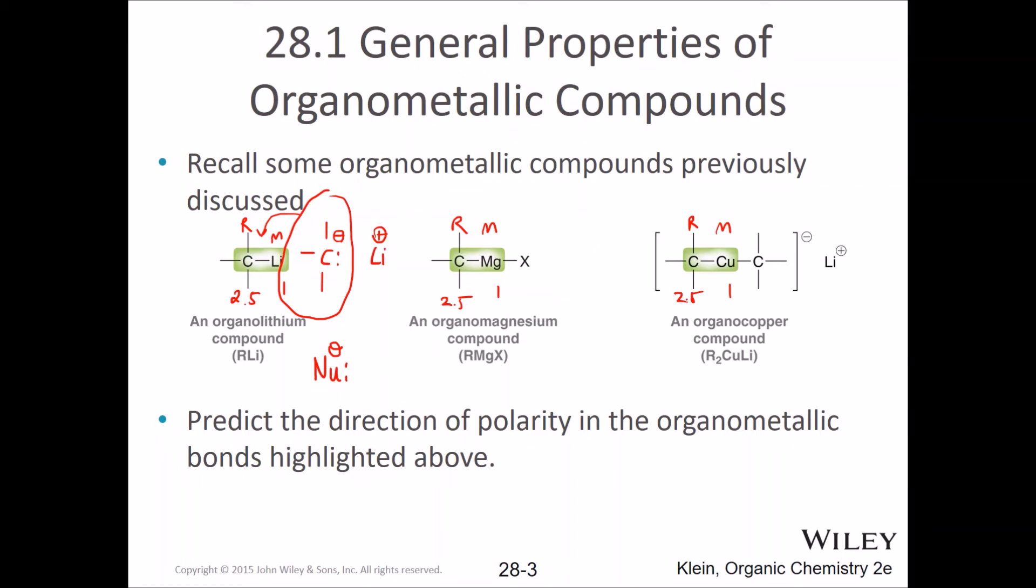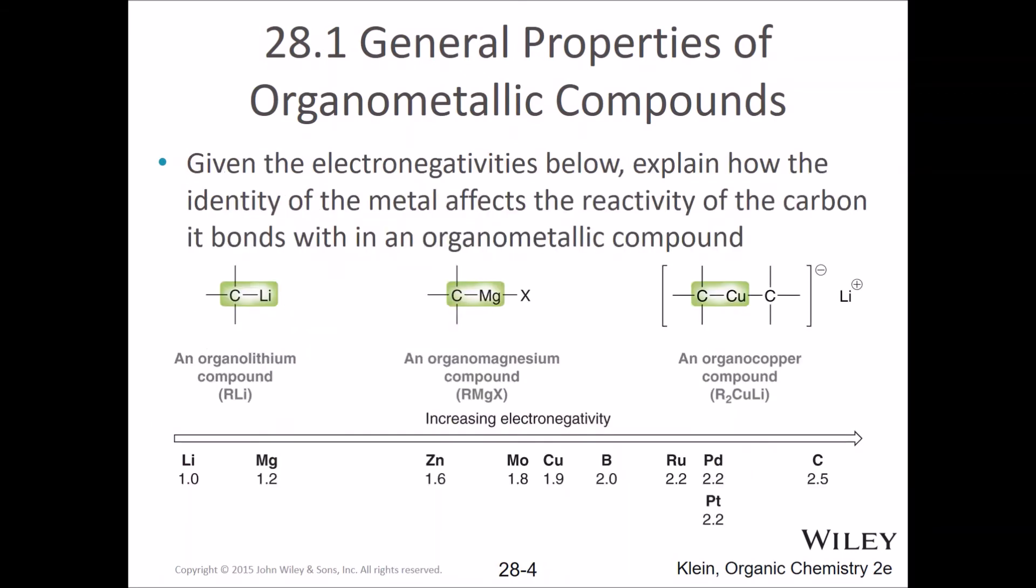Now given the electronegativities below, explain how the identity of metal affects the reactivity. If magnesium is 1.2 and lithium is 1, then you're going to have a very polar bond. Magnesium is also about 1 as we said, and copper is closer to 2, so this is not nearly so polar.